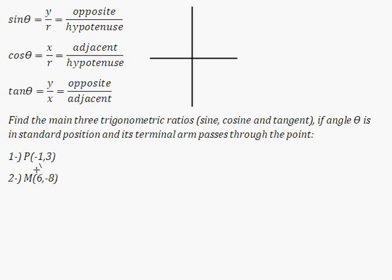So the first point that we're going to find sine, cosine, and tangent for is at negative 1 and 3. So it's going to be approximately over here. So let's say that this right here is point negative 1 comma 3. That means that the x value is negative 1, the y value is positive 3, and right now we just need to know r, the value of the radius. We can use Pythagoras in order to find that out, which is going to be quite simple.